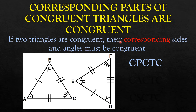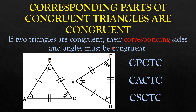Some resources may be using CACTC, which stands for corresponding angles of congruent triangles are congruent, instead of CPCTC. Remember, CACTC is for angles and CSCTC is for sides.